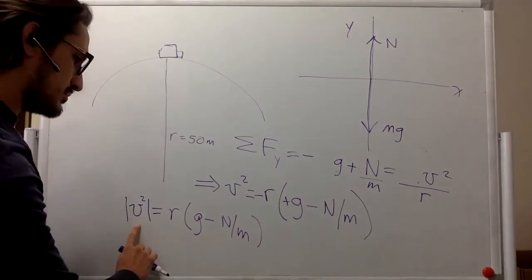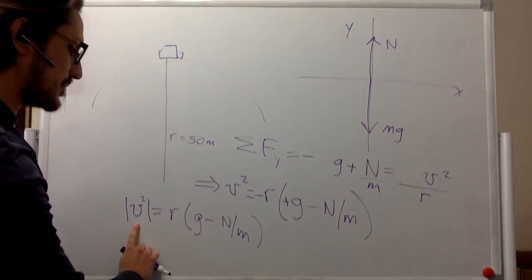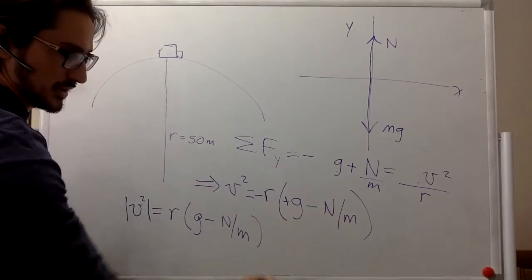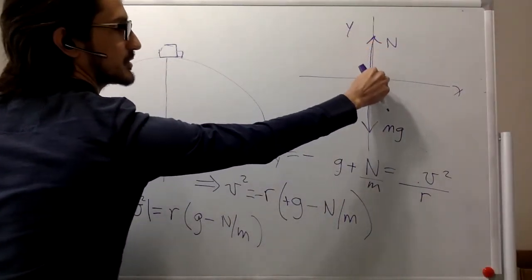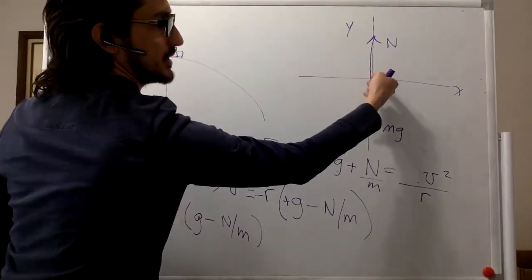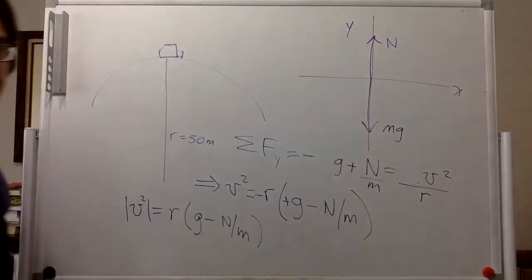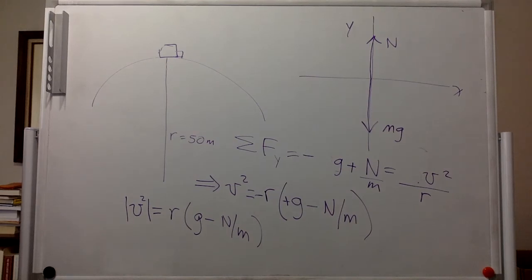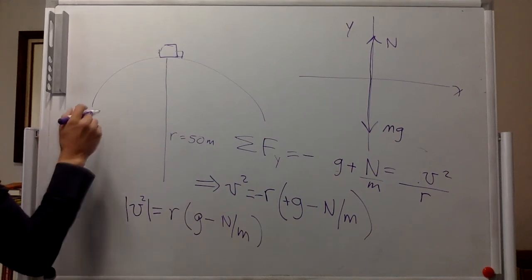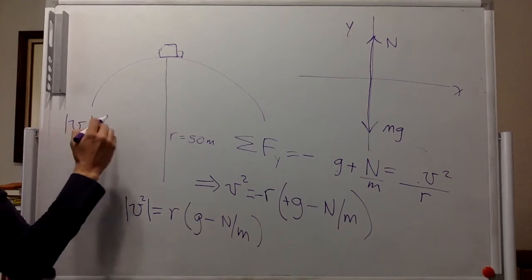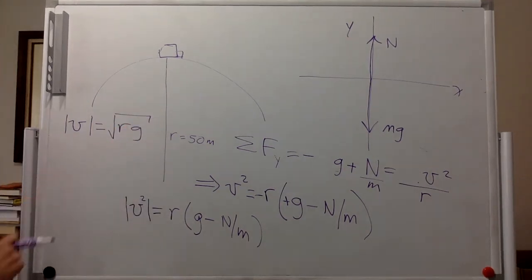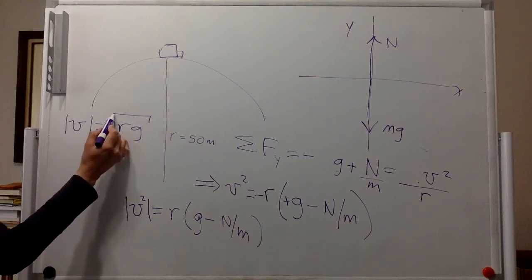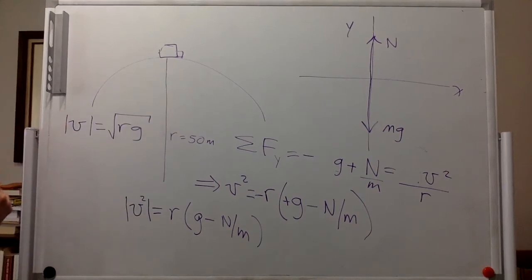The maximum speed is going to occur when N equals zero. If you think about it, that is exactly when the car will fly off — as N decreases to zero. So if we make N equal to zero, the maximum speed is going to be the square root of r times g. So it is independent of the mass, which makes sense because we were not given a mass. It doesn't matter if your car is 1,000 pounds or 3,000 pounds — it only depends on the radius.